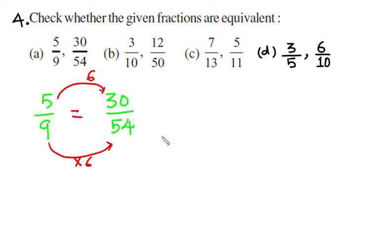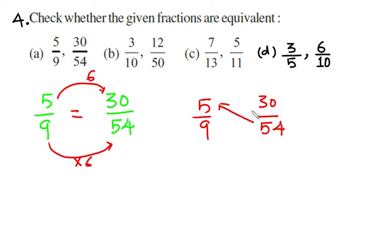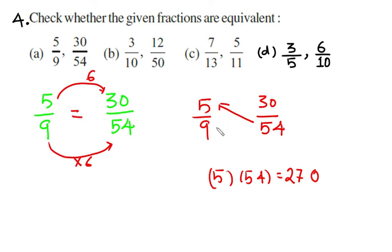Alternate method: cross multiplication. We have fractions five ninths and thirty fifty-fourths. We multiply the numerator of the first fraction by the denominator of the second: five times 54. And we multiply the denominator of the first fraction by the numerator of the second fraction.